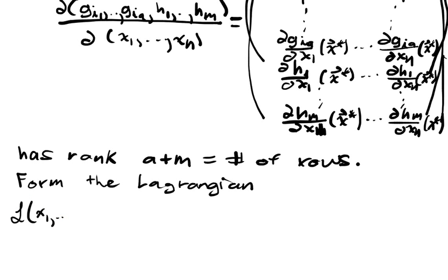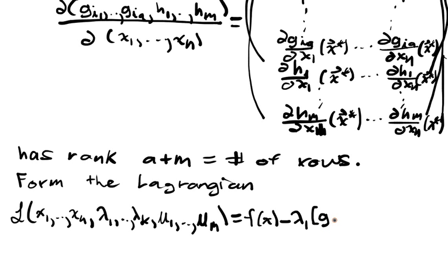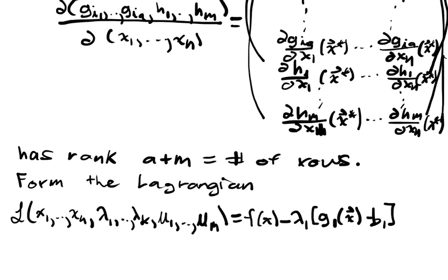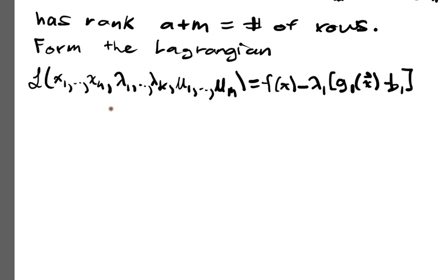L of all the variables up to Xn. I introduce K lambda parameters, I introduce M mu parameters, and the Lagrangian is F of X minus lambda 1 times the inequality constraints, minus lambda k Gk X minus Bk.